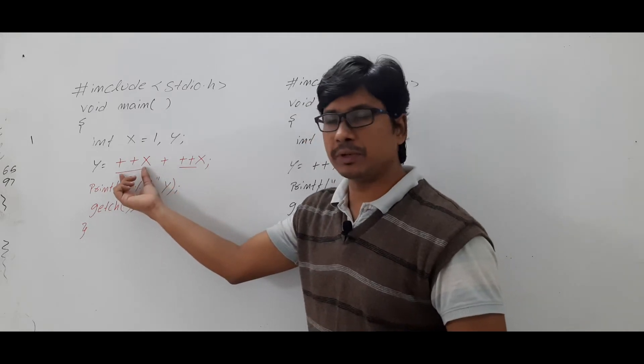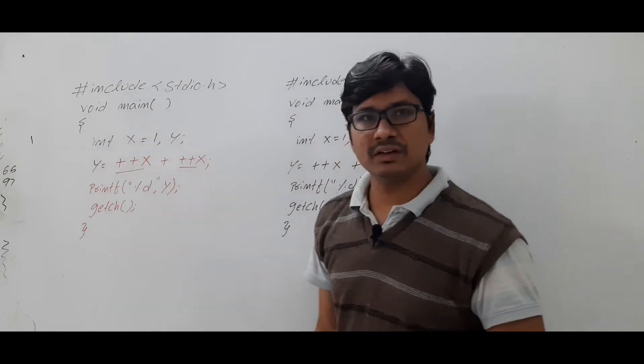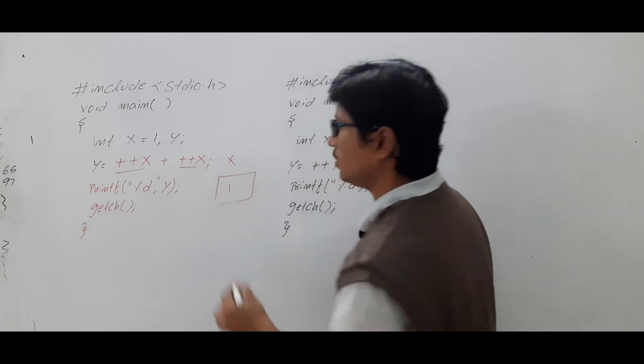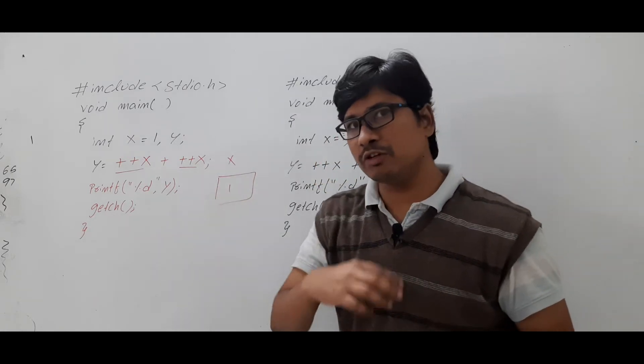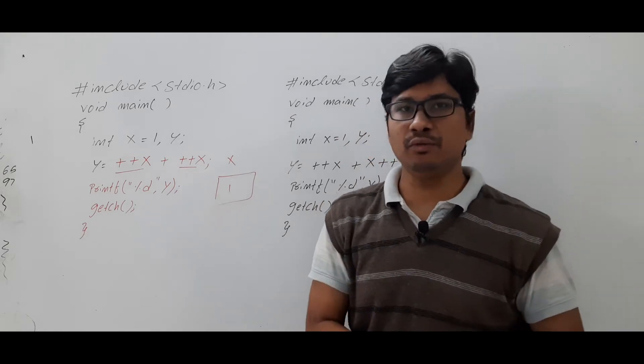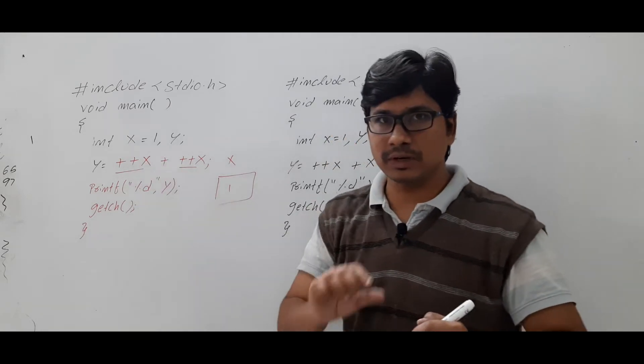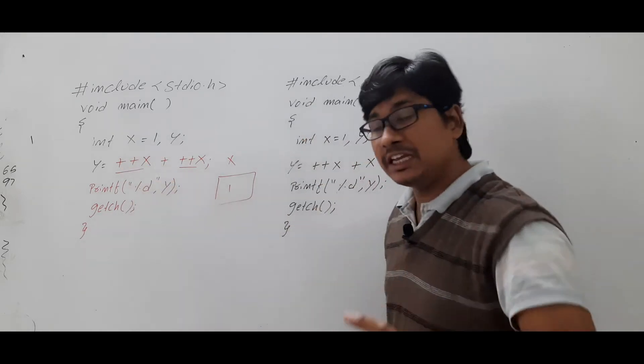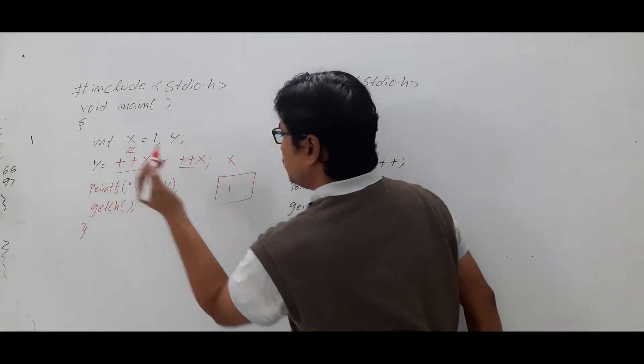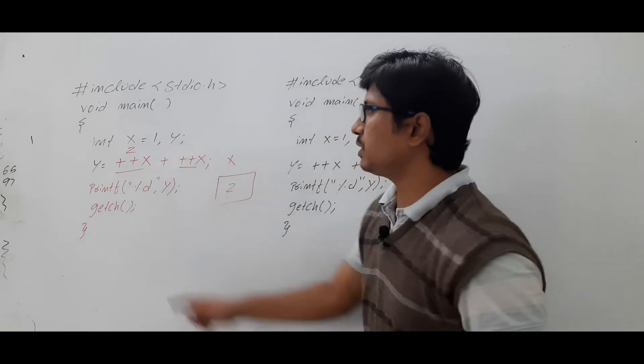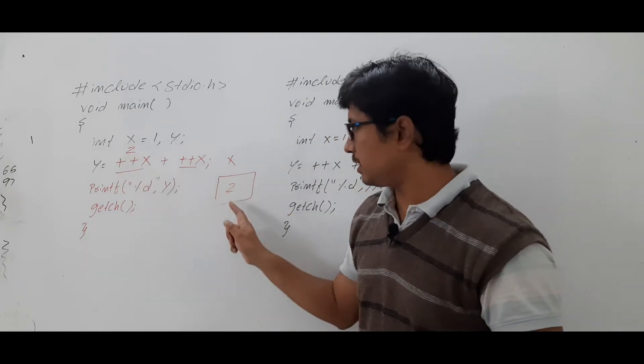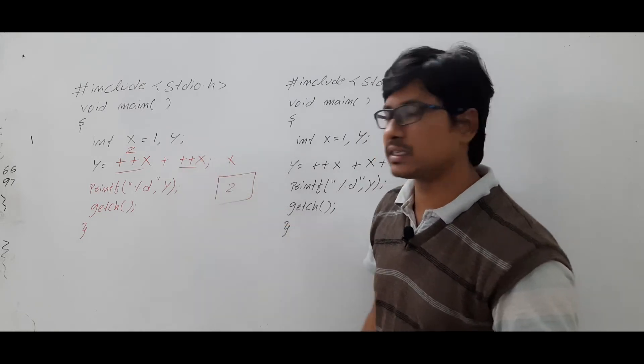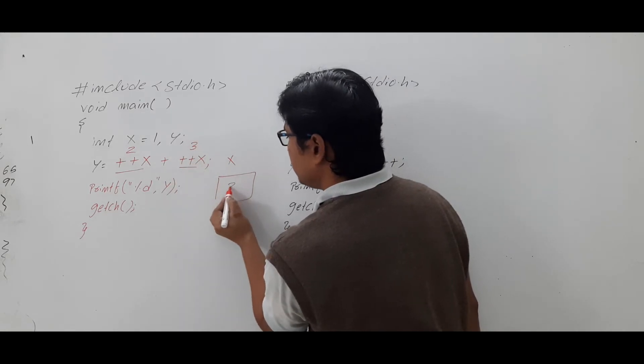So first you need to perform the pre-increment then perform the addition then go for the assignment. Now x value is initially we have taken x value as 1. What is pre-increment? First it will perform the increment then it will assign the value. Now ++x is nothing but you are performing the x value increment by 1. So ++x pre-increment so x value will become 2. First you will get the value 2 here and then value also will be updated here 2. Then if you come here what is the x value 2, so ++x so it will become 3 and x also will be updated to 3.